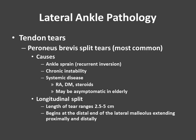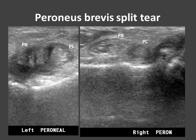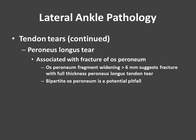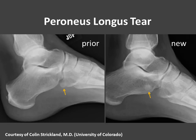Peroneal tendon tears can occur in patients with systemic disease including rheumatoid arthritis, diabetes, and steroid use, and in the elderly this can be asymptomatic. The longitudinal split can range from 2.5 to 5 centimeters in length, beginning at the lateral malleolus and going in both directions. Here are two transverse images through the peroneal tendons — on the right, more normal-appearing peroneal tendons; on the left, abnormal echotexture within the peroneus brevis consistent with a split tear. We can also see tears of peroneus longus, usually associated with fracture of an os peroneum. If we see widening of the os peroneum fracture fragments by more than 6 millimeters, that suggests fracture with full thickness tear. Remember that a bipartite os peroneum can be a potential pitfall.